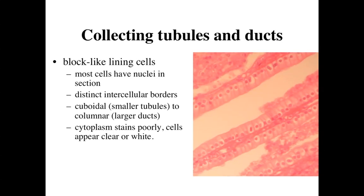They're going to have prominent nuclei throughout the section, so within a given section, every cell is going to have a nucleus present. The cells are going to be essentially classic simple cuboidal in the smaller tubules to simple columnar epithelia within the larger ducts. If we take a look at the cytoplasm, it's going to stain relatively poorly — the cells are going to appear either clear or white, basically a pale staining appearance.